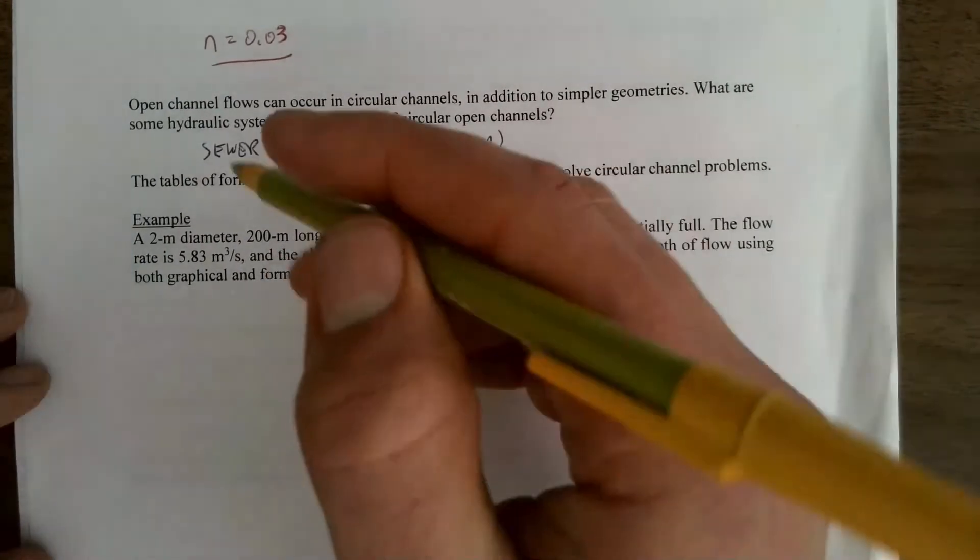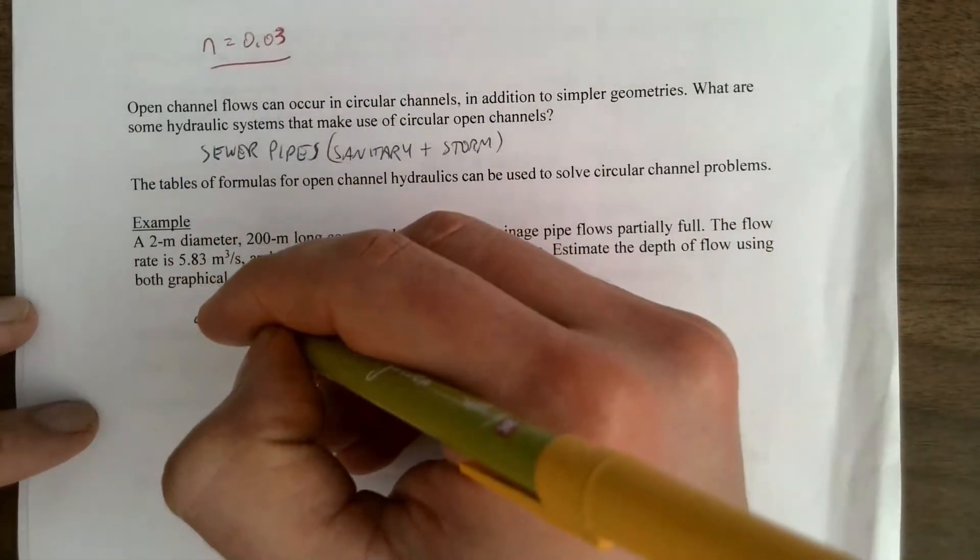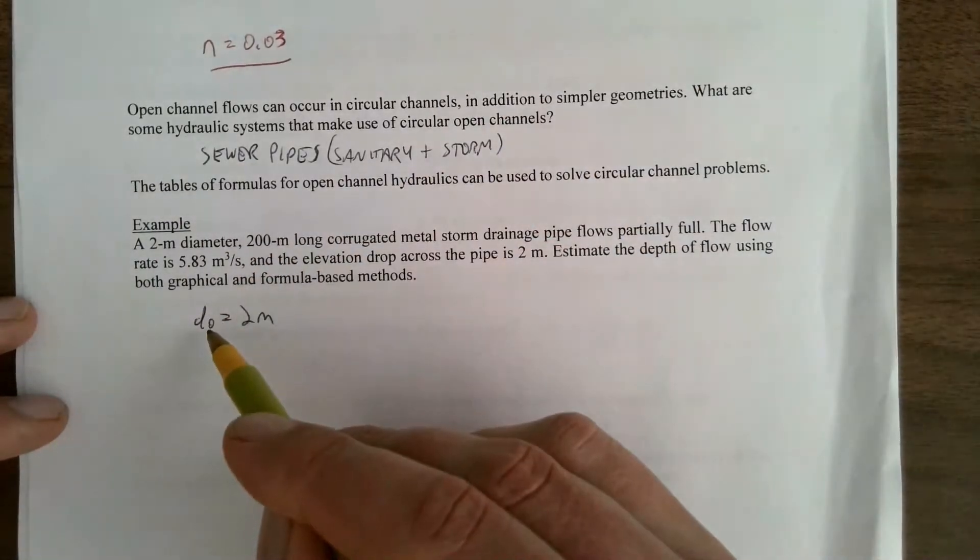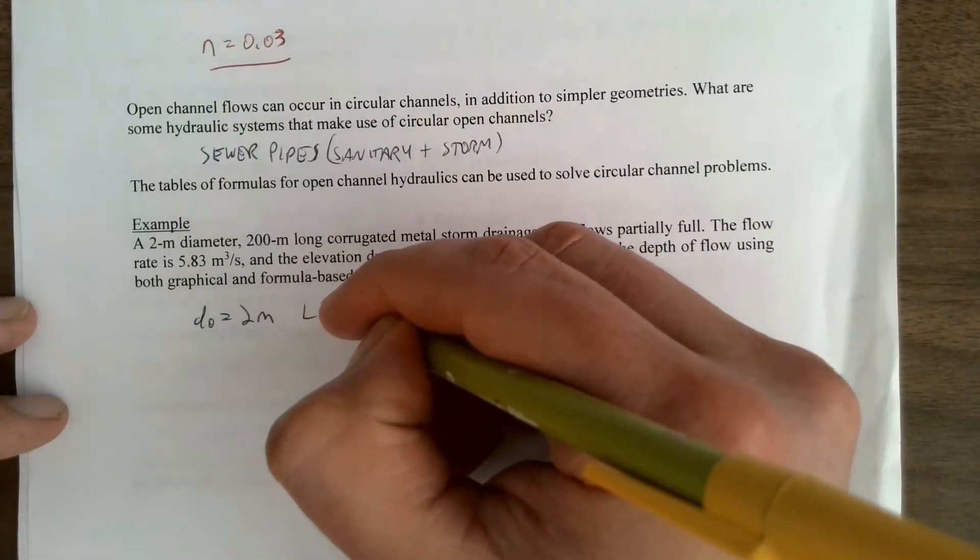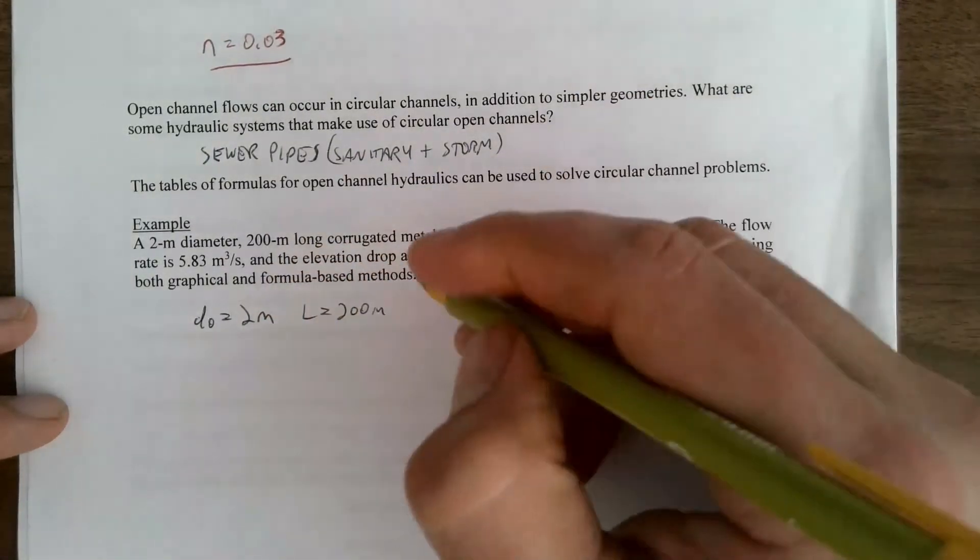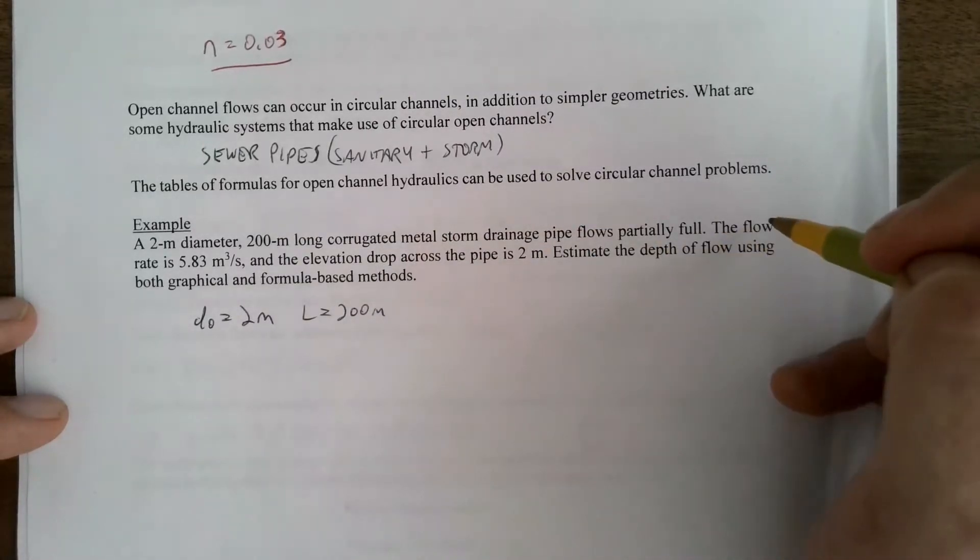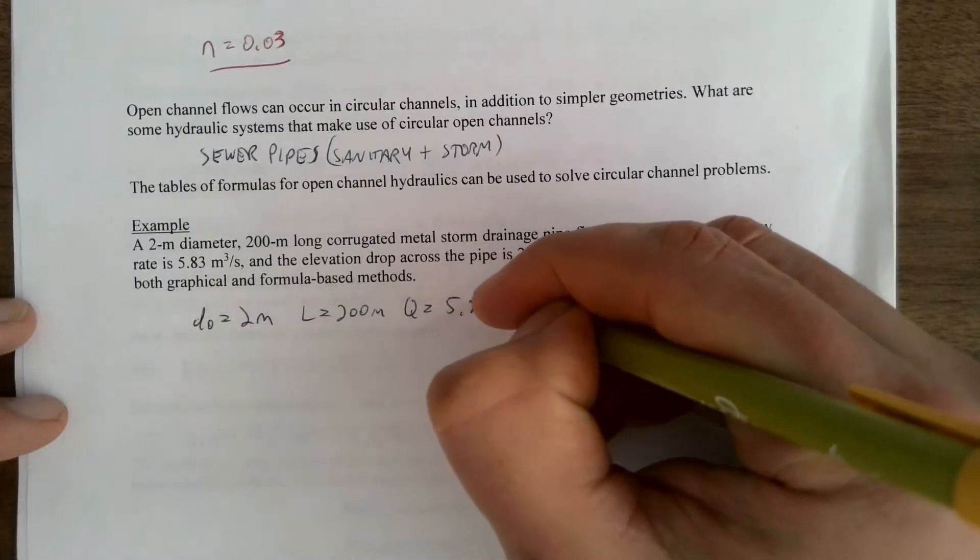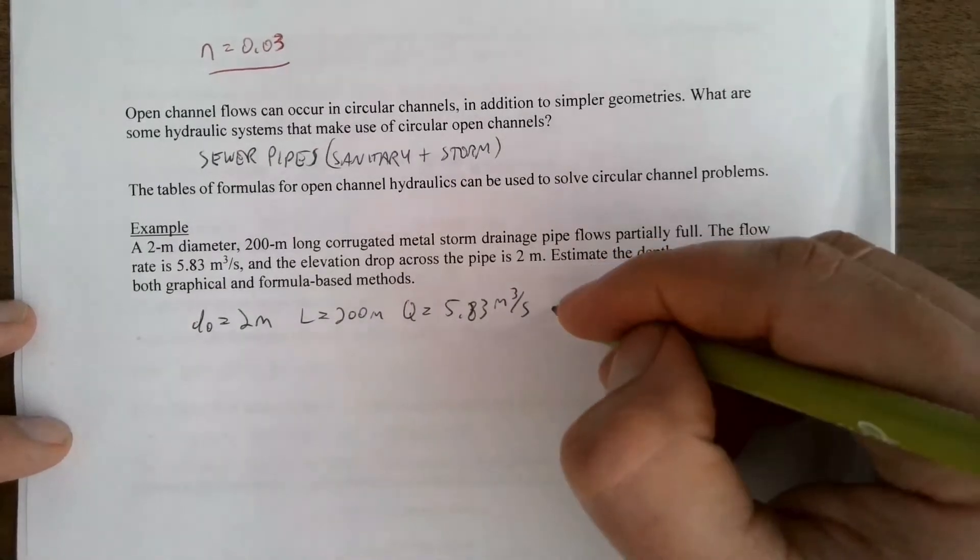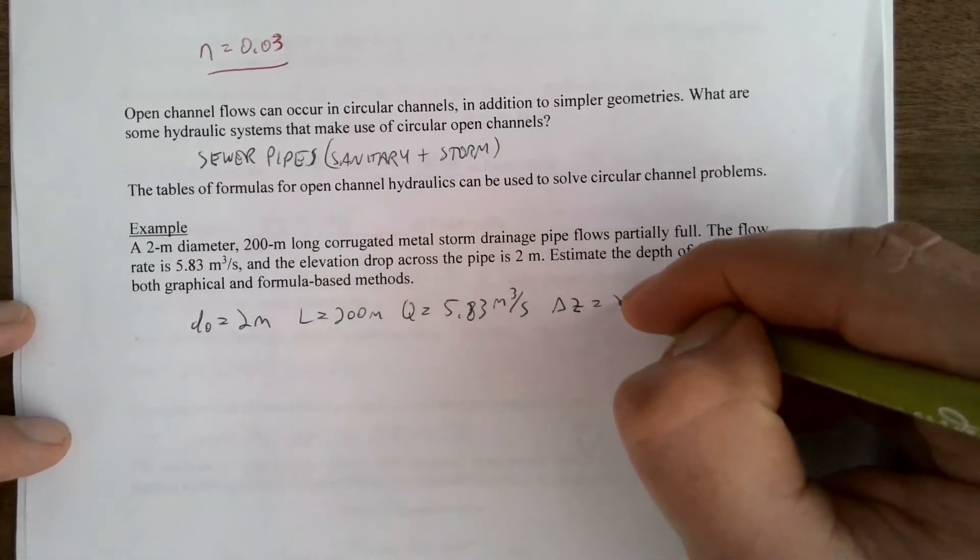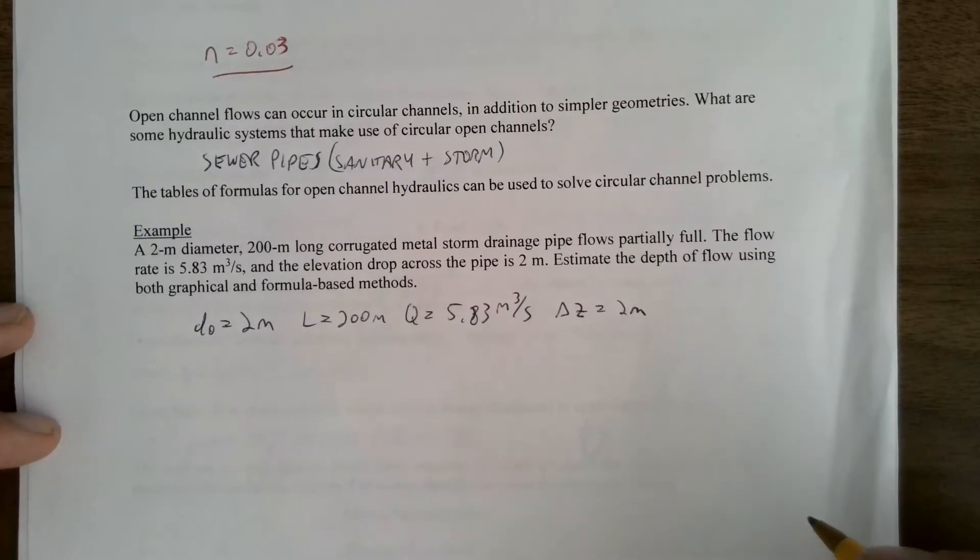Here we've got a two meter diameter, so diameter here is D0. The depth would be if it was flowing full, but we don't know what this one is. It's 200 meters long. So, L is 200 meters. It's corrugated metal and it's flowing partially full. And we're told that the flow rate is 5.83 cubic meters per second. And that there's a drop across the pipe of two meters. And so, we're supposed to estimate the depth of the flow here.